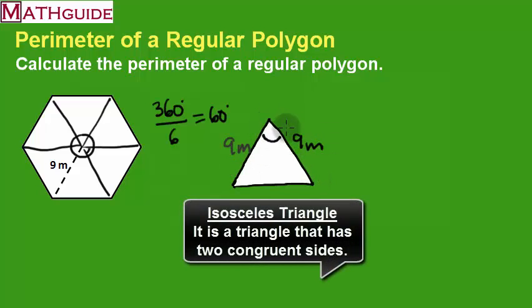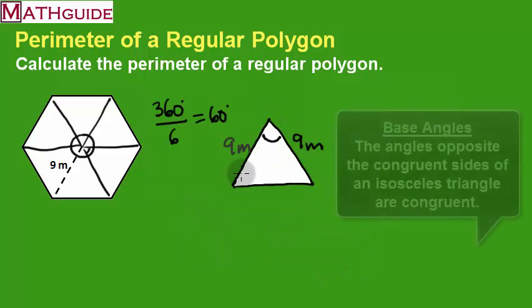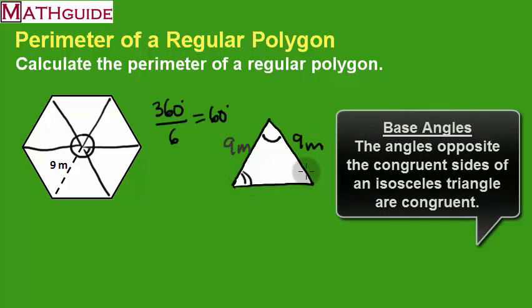Therefore, it is an isosceles triangle. So, if it's an isosceles triangle, that means that if these are the legs, then opposite those legs, you would have congruent base angles.